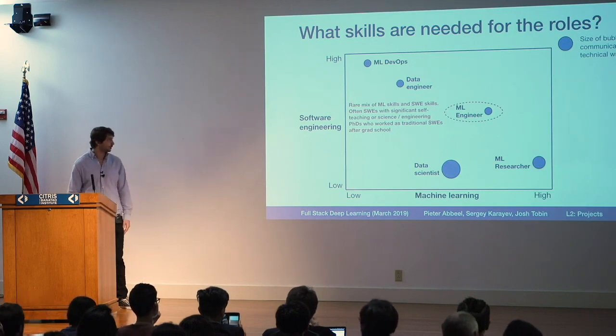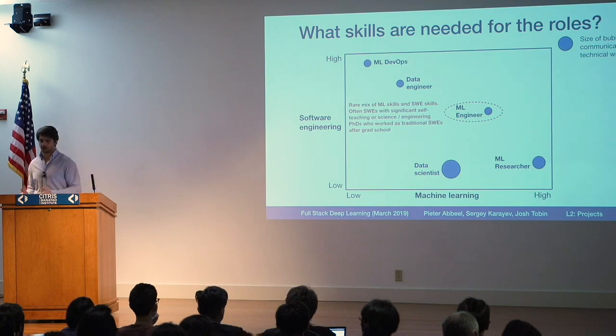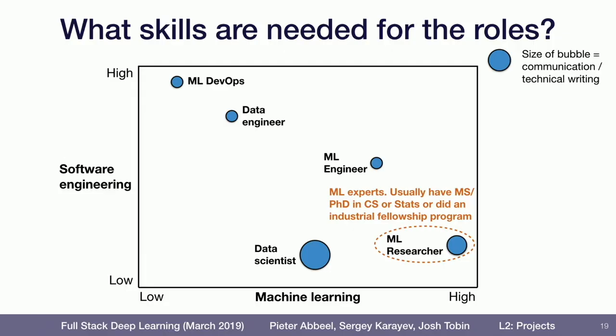Common backgrounds for machine learning engineers include software engineers who have spent a lot of time self-learning machine learning, or science and engineering PhDs — not necessarily machine learning PhDs — who have worked as software engineers for a while. Machine learning researchers are typically the ML expert, and the most common background is still a master's degree or PhD in CS or stats. But it's becoming increasingly common to see people who have gone through the Google Brain Fellowship or the Facebook Fellowship, and sometimes people do transition from more typical software engineering roles.